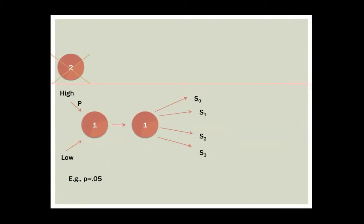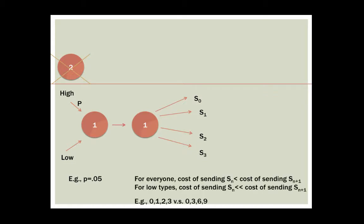Although the peacock can't tell the peahen his type, he does have the opportunity to send a signal, which for a peacock just means growing a long, beautiful tail. For everyone, the cost of sending signal S-sub-n is less than the cost of sending signal S-sub-n-plus-1. But for low-types, this cost is much greater.